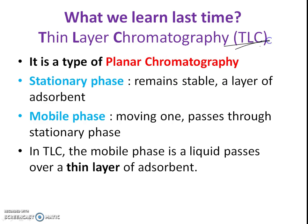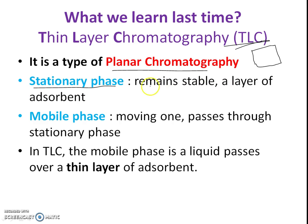When we more specifically talk about TLC, that is thin layer chromatography, we have to consider it is a planar chromatography — a thin layer of adsorbent onto a flat or planar surface. The stationary phase used in TLC is a thin layer of adsorbent, while the mobile phase is the liquid that passes over the stationary phase.